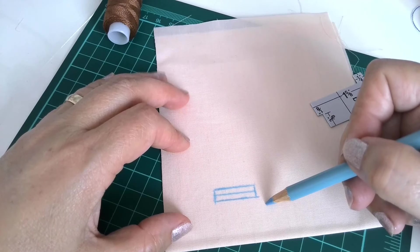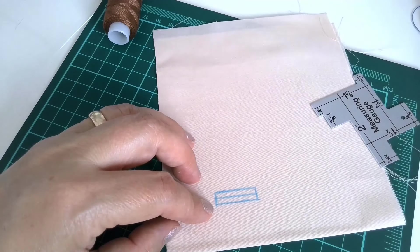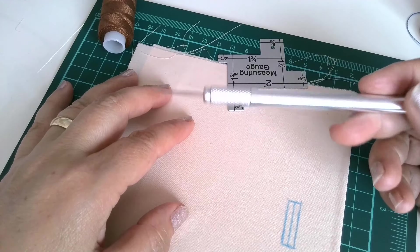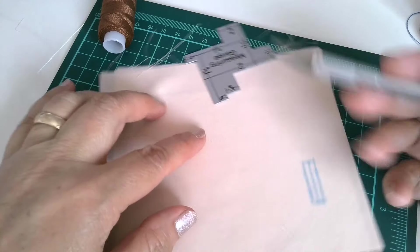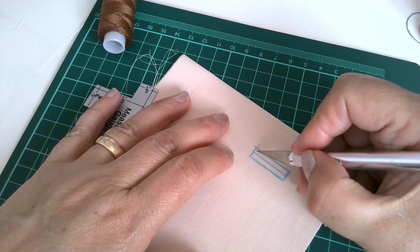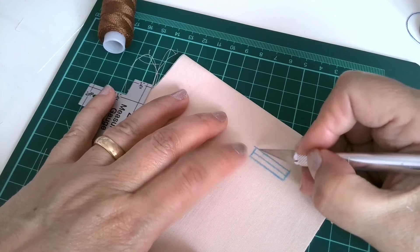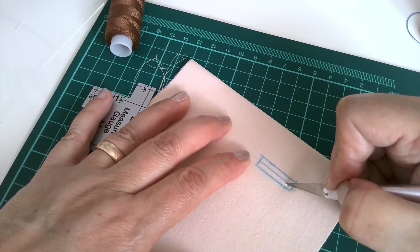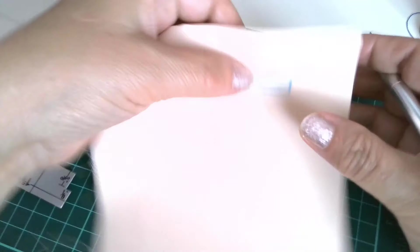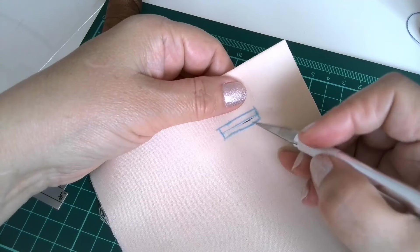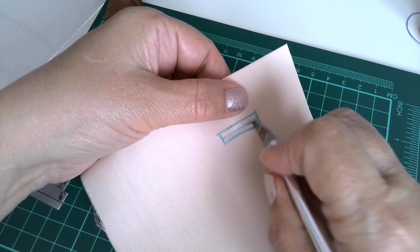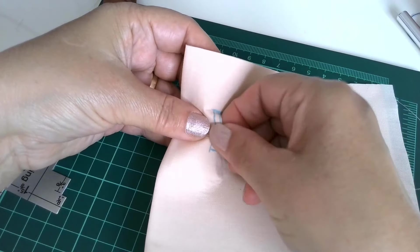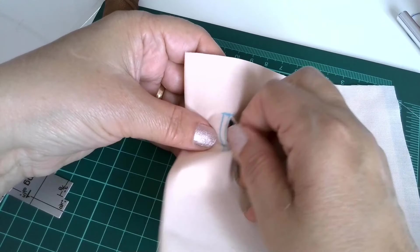Okay, this is my buttonhole. I marked it. Now I can cut. I'm going to use this cutting tool.